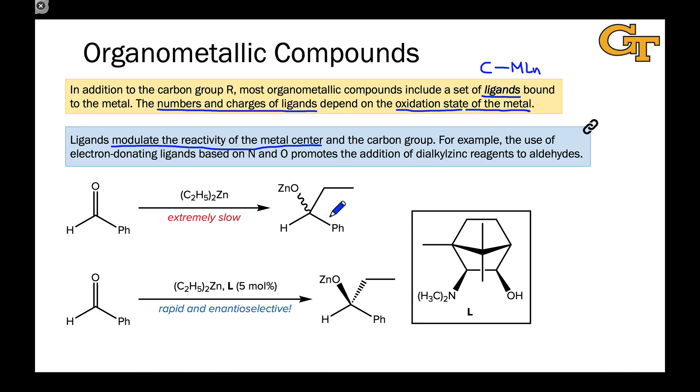Electron-rich ligands can make the metal center more electron-rich. Electron-poor ligands can make the metal center more electron-poor, and thereby modulate the reactivity of the carbon at the same time.